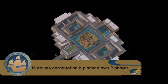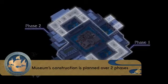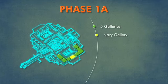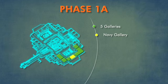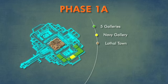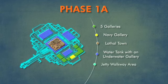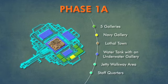The museum's construction has been planned over two phases. Phase 1A includes Part 1 of the National Maritime Museum with five galleries and a navy gallery to be developed by the Indian Navy, which will be one of the largest galleries in the museum. This phase will also see the construction of Lothal Town — a mini replication of the town at the center of the museum premises — a water tank with an underwater gallery, a jetty walkway area, and part of the staff quarters. The development of Phase 1A is undertaken by Tata Projects Limited.